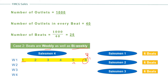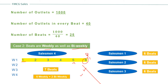On Saturday, he covers bi-weekly: Week 1 Saturday and Week 3 Saturday he covers one beat, and Week 2 Saturday and Week 4 Saturday he covers another beat. So there are seven beats total — five weekly and two bi-weekly. Seven plus 18 equals 25 beats. So for 25 beats, we need four salesmen.